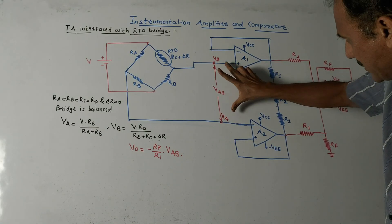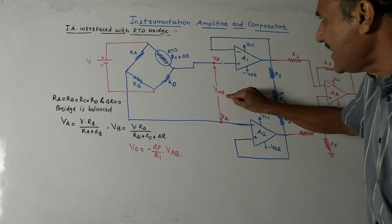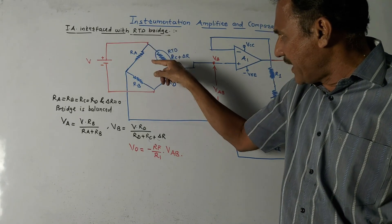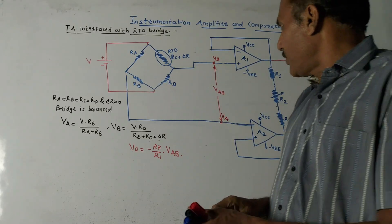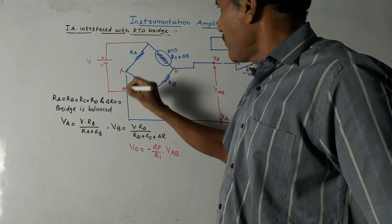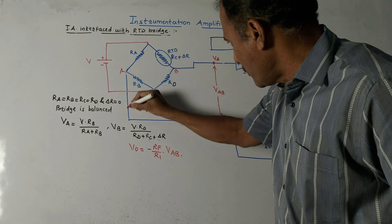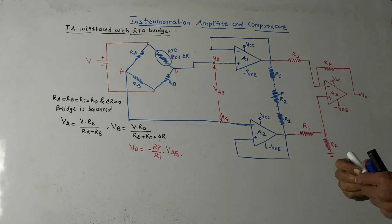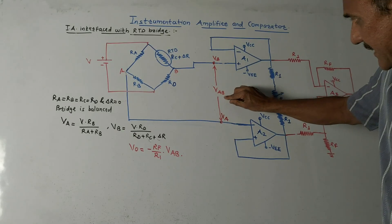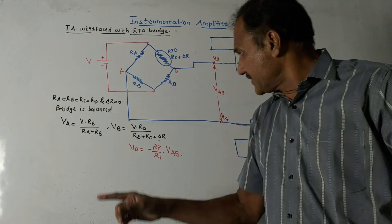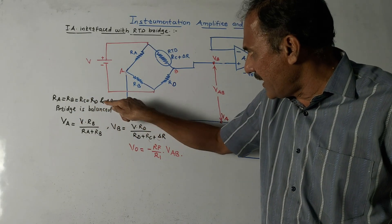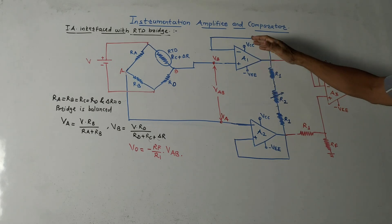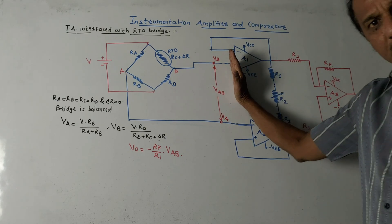Under the balanced condition, the output of the bridge is zero. The output is the difference between the two voltages VA and VB, written as VAB. If the bridge is balanced, this VAB will be zero. The supply voltage V is given to the bridge, and from points A and B we take the output. So under balanced conditions — all resistors equal and ΔR = 0 — the output VAB equals zero.